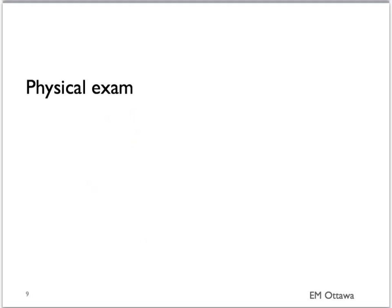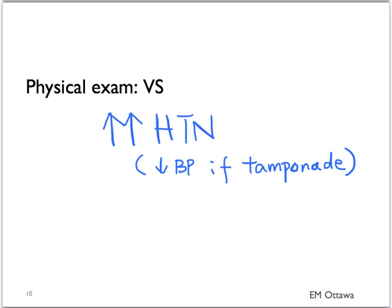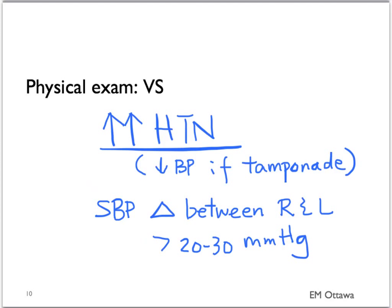We'll separate this into vital signs and specific end organ effects. As you may expect, on vital signs, the patient is usually hypertensive, with the exception that if they are in tamponade, then they will be hypotensive. However, for most patients, the blood pressure would be high. Depending on where the flap is, there might be a difference between the patient's right arm and left arm blood pressure. It would usually be more than 20 to 30 millimeters mercury between the left and the right arm.